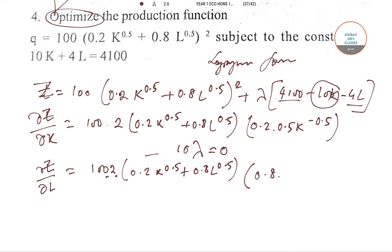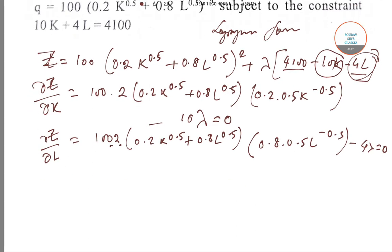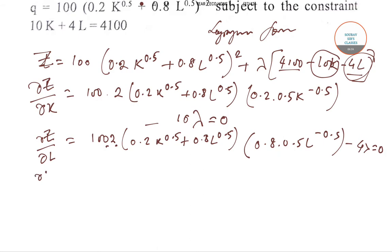Minus 4 lambda equals zero. We've got two equations, and del z/del lambda directly gives 4100 minus 10K minus 4L.